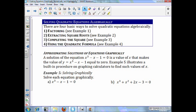Now, approximate solutions of equations graphically. A solution of the equation x cubed minus x minus 1 equals 0 is a value of x that makes the value of y equals x cubed minus x minus 1 equal to 0. Example 5 illustrates a built-in procedure on a graphic calculator to find such values of x.